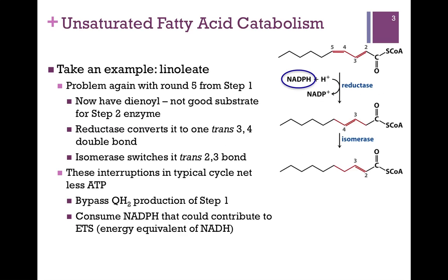When we get to the next round, we have a new problem. We have a dienoyl — two double bonds — and our first goal is to saturate one of those double bonds. We can only have one double bond for the next step in oxidation. That's going to cost us a molecule of NADPH to reduce that double bond. Our product gives us a trans-3-4 bond, but we do need the trans-2-3, so here we need an isomerase to do that conversion for us.